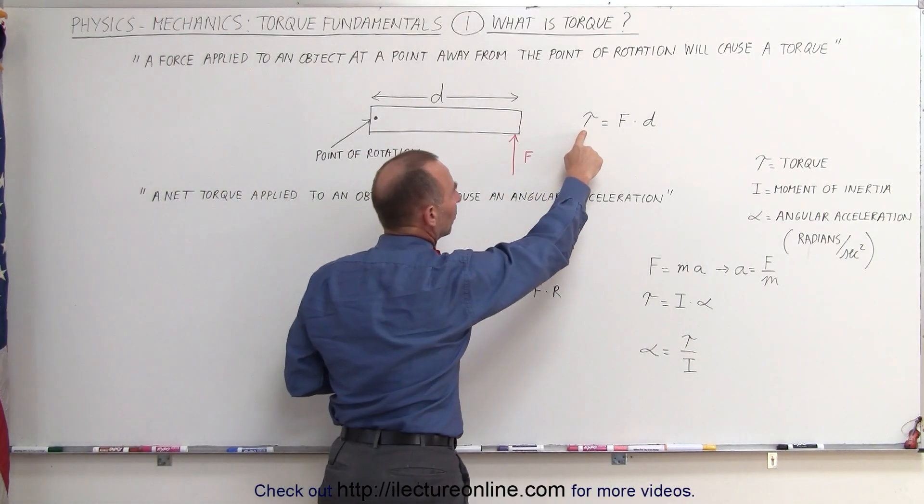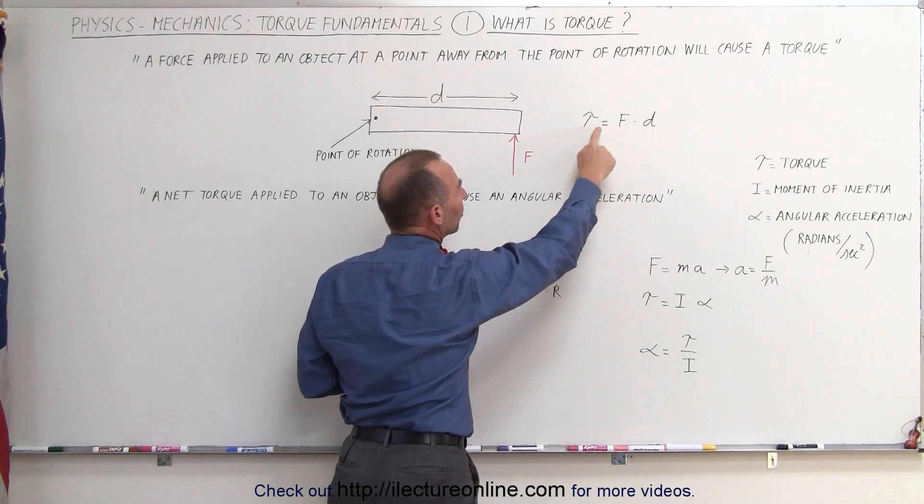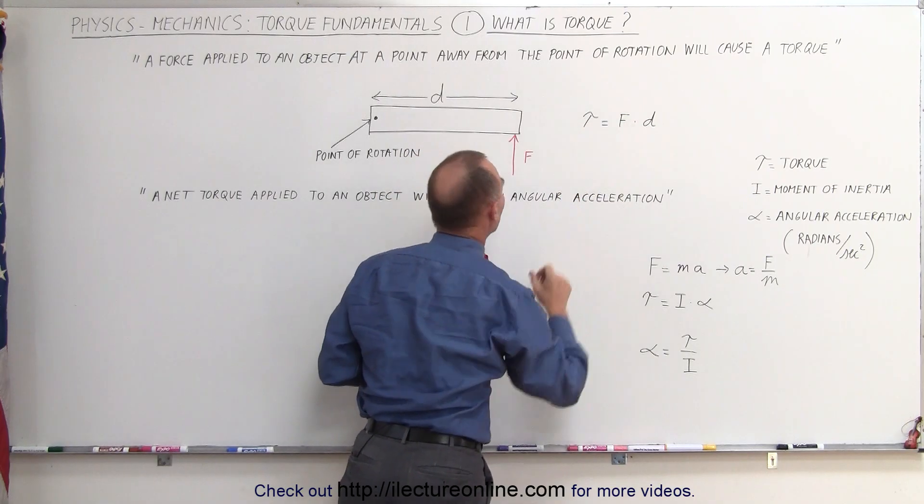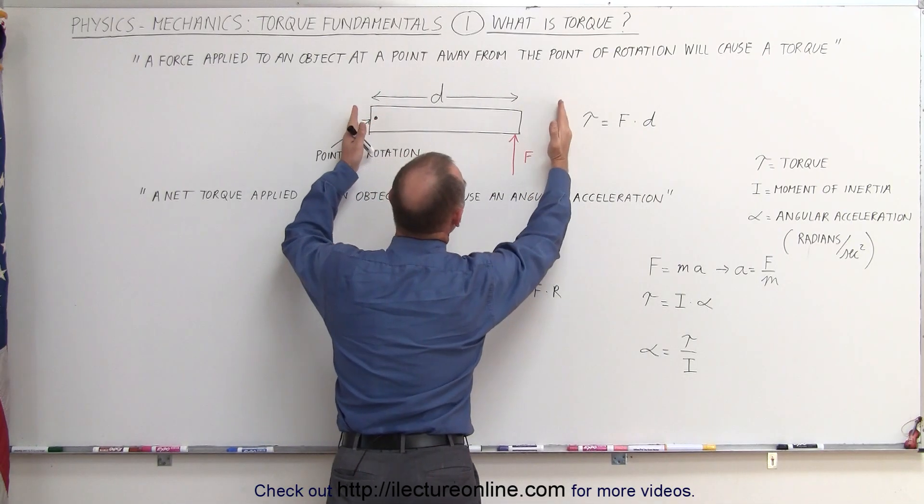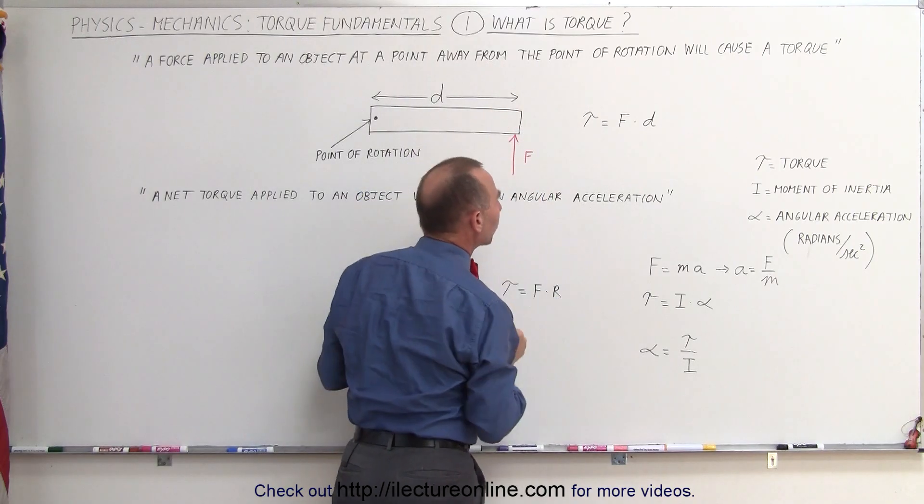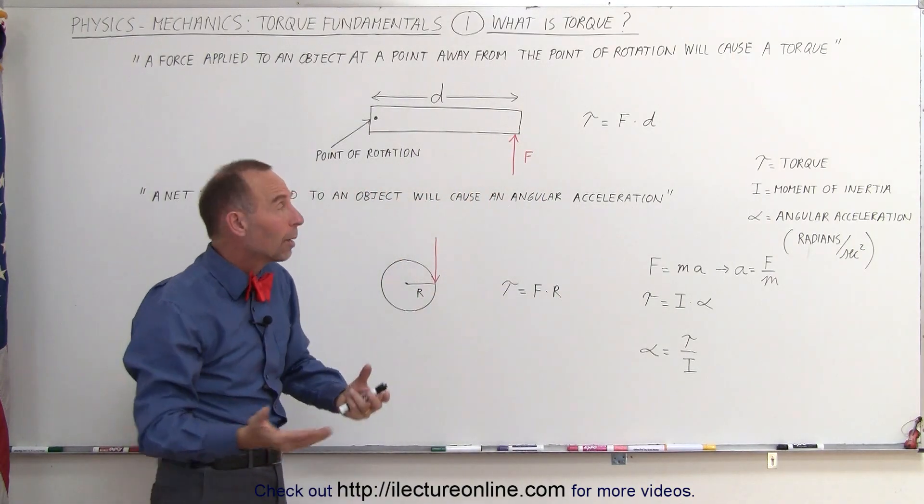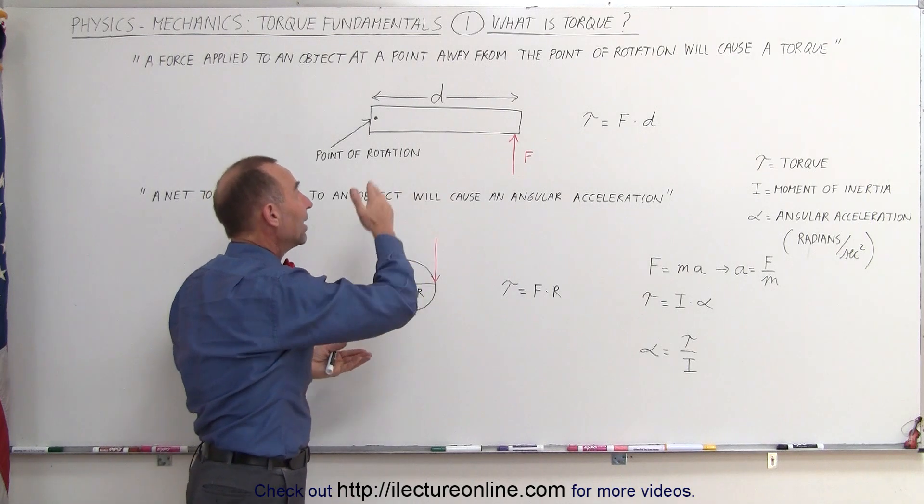The torque, we use the Greek letter tau, is then simply the product of the force times the distance. The greater the distance, the greater the torque. The greater the force, the greater the torque. So the torque is simply a product of the force and the distance.